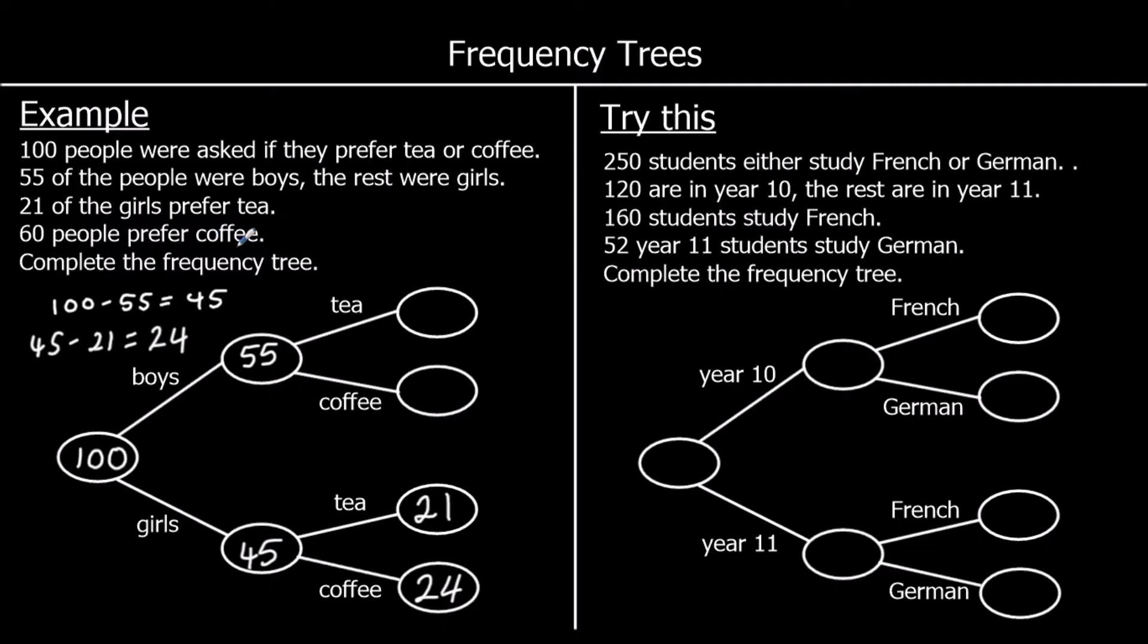60 people prefer coffee. So in total 60 people prefer coffee. So this box, the 24 and the missing coffee box must add up to 60. So 60 take away 24 is 36.